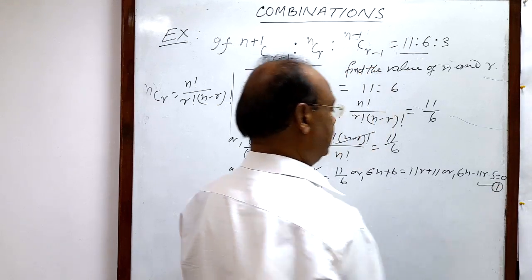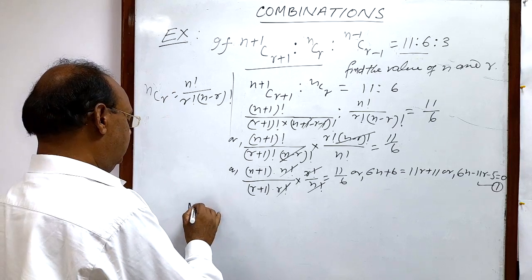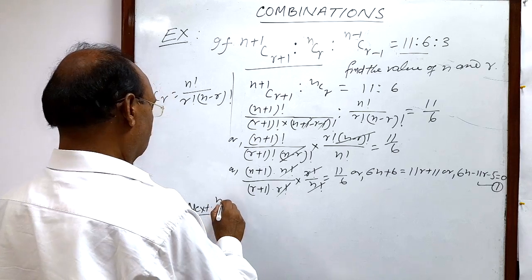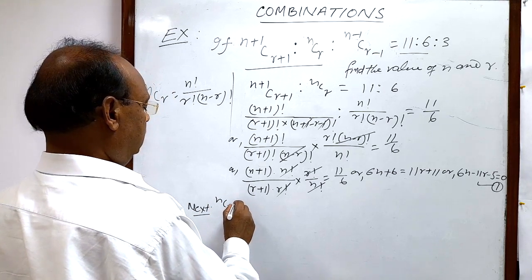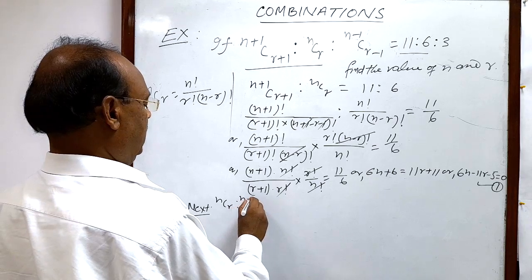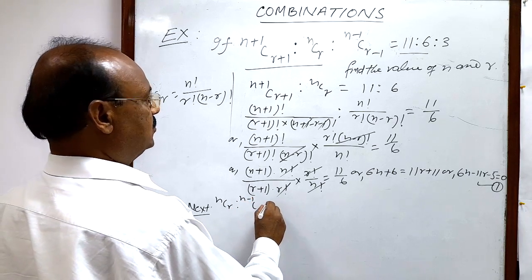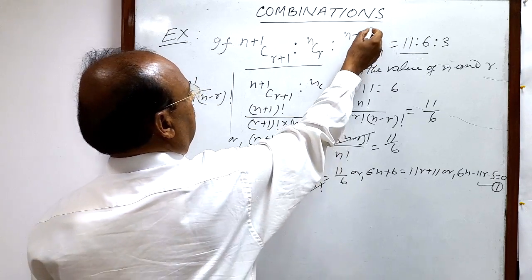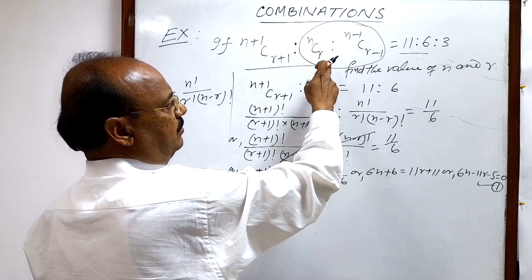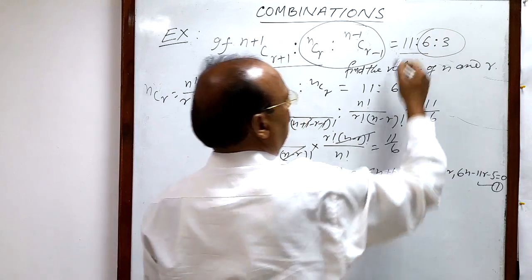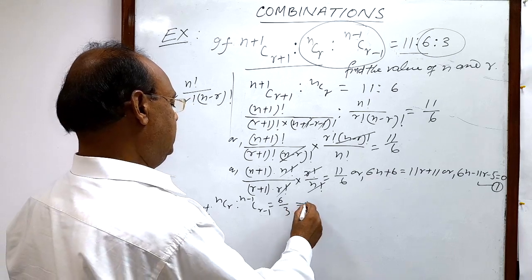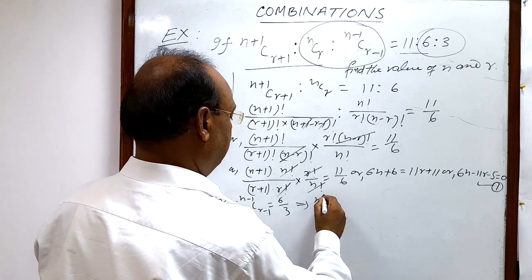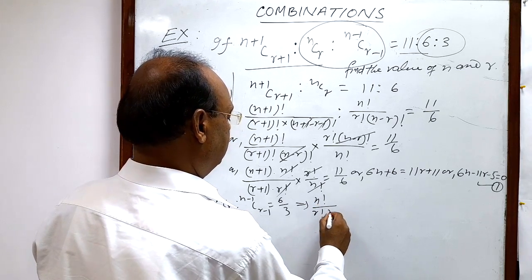Next, similarly, we take the last two parts: nCr is to (n-1)C(r-1) is equal to 6 by 3. We are taking these last two parts on the left-hand side and the last two parts from the right-hand side. Now we will expand it using the formula.